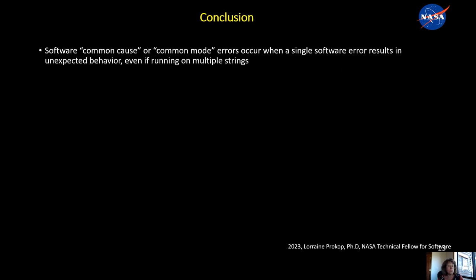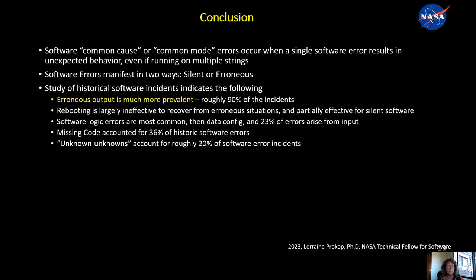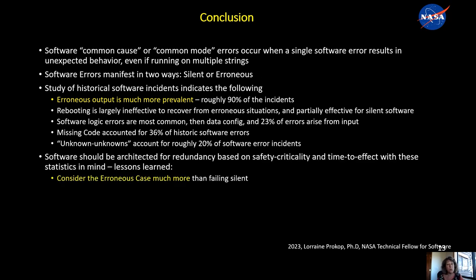In conclusion: software common cause / common mode errors occur when a single fault or single error results in unexpected behavior, even if it runs on multiple strings. They can manifest in two ways — fail silent or erroneous — and a study of historical software incidents indicates erroneous is much more prevalent. Rebooting is largely ineffective. Logic and coding errors are the most common, then data and config, and 23% are input-related — combined sensor and command. Missing code accounted for 36% and unknown unknowns were roughly 20%. The lesson learned is software needs to be architected based on safety criticality and time to effect with these things in mind.